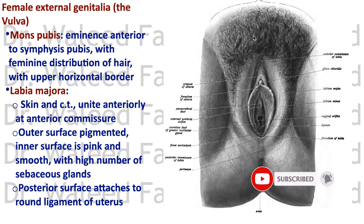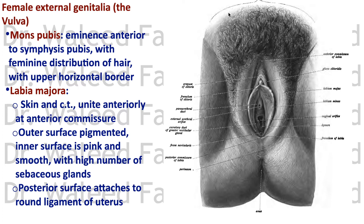The mons pubis is anterior to the symphysis pubis with a feminine distribution of hair — meaning the hair has an upper horizontal border. You should pay attention to this even in male patients, especially with liver disease, because sometimes hormonal imbalance leads to feminine criteria like the feminine distribution of hair.